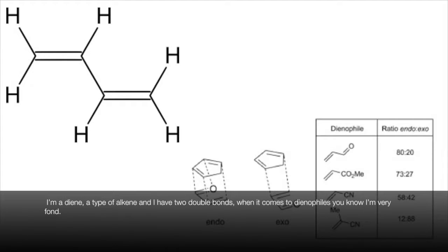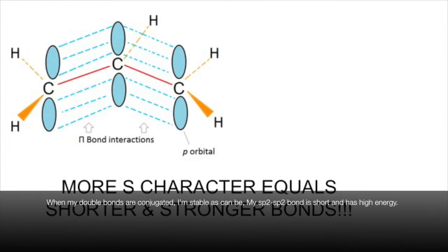I'm a diene, a type of alkene, and I have two double bonds. When it comes to dienophiles, you know I'm very fond. When my double bonds are conjugated, I'm stable as can be. My sp2-sp2 bond is short and has high energy.